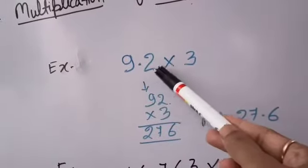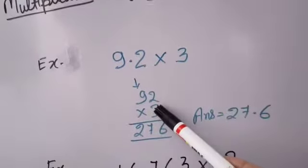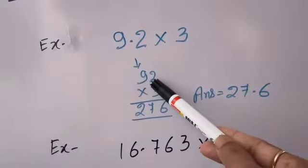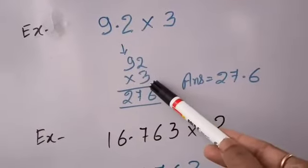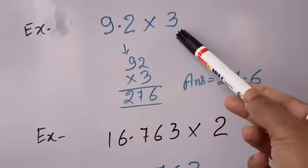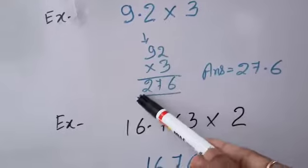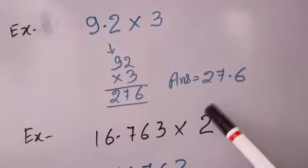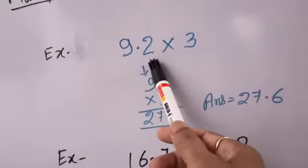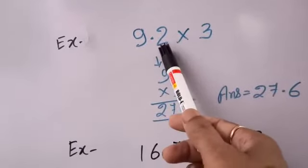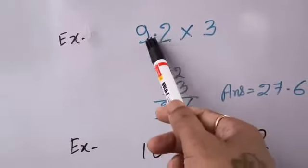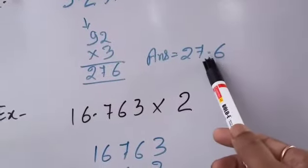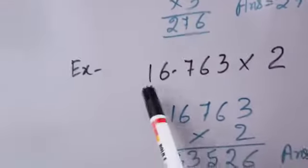9.2 is a decimal multiplied by whole number 3. We want to multiply 9.2 by 3. First we write the decimal number without the decimal point, and the multiplier is written as it is. So 92 multiplied by 3 — the answer is this. When we finally write the answer, we put the decimal after the same number of digits as given in the multiplicand. In the multiplicand, the decimal is after one digit, so we write the decimal in the answer after one digit.